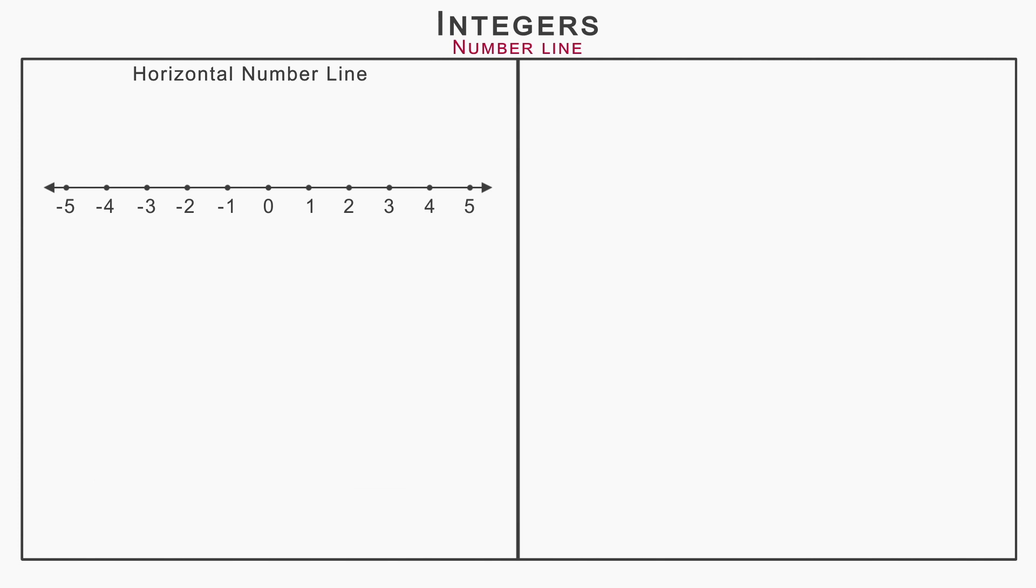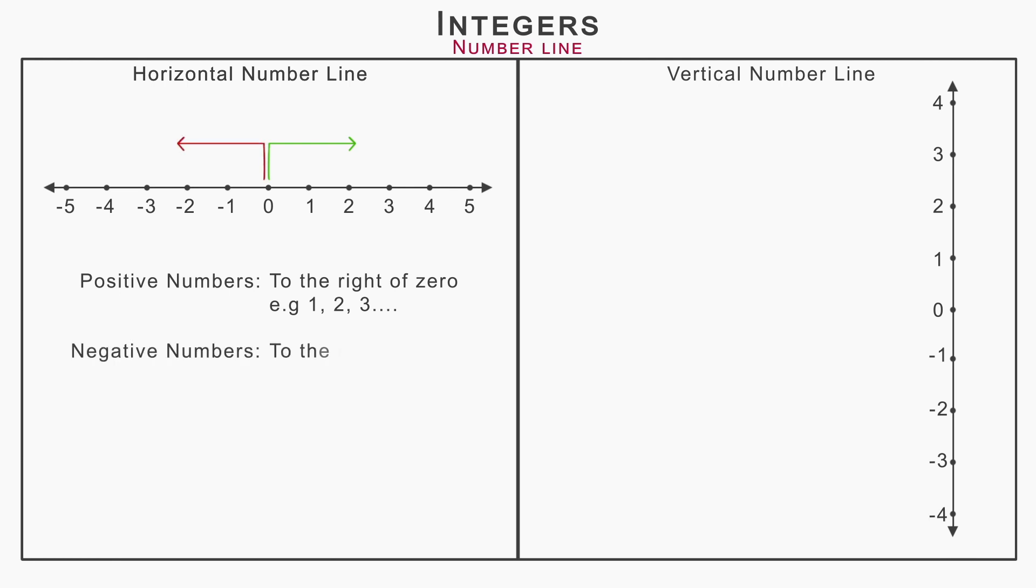The horizontal and vertical lines on your screen bearing numbers are called number lines. On the horizontal number line, positive numbers are to the right of zero, example 1, 2, 3, and so on. Negative numbers are to the left of zero, example minus 1, minus 2, minus 3, and so on.